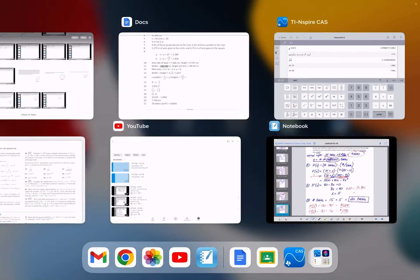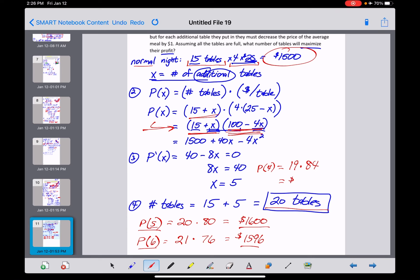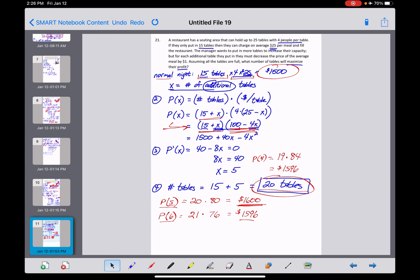Again, $1,596. So obviously less than the $1,600 profit that we think we found for our maximum. So again, the question was asking, what number of tables will maximize their profit? 20 tables is the answer we were looking for here for problem number 21.